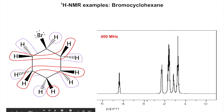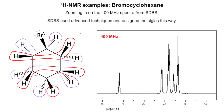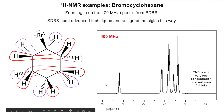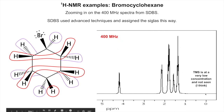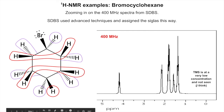I'm taking that 400 MHz spectrum from SDBS, zooming in and stretching it out. SDBS uses advanced techniques to assign which signals correspond to which groups. For the TMS reference - we're not seeing it in almost all SDBS spectra. I think what they do is add a very low concentration of TMS, then expand the peak digitally to find it, set it to zero, and then scale back down so it's invisible. They don't want you to see TMS because it's not part of the molecule, though in a research setting you almost always see it.